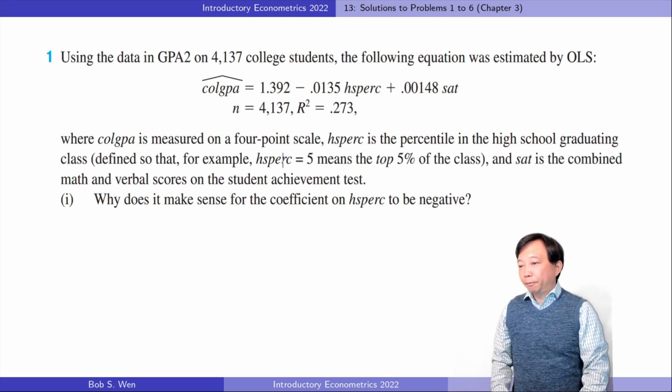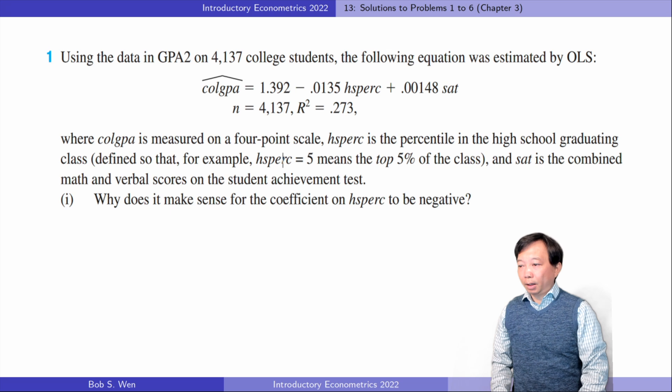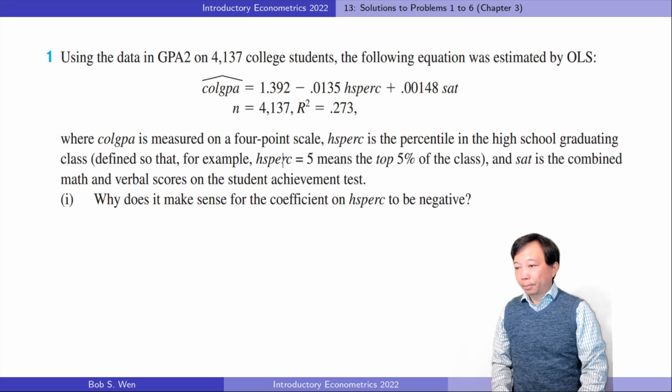Here's the first problem. We regress the college GPA on the percentile in the high school graduating class and SAT score. The first question is about the negative sign of the coefficient on the high school percentile.